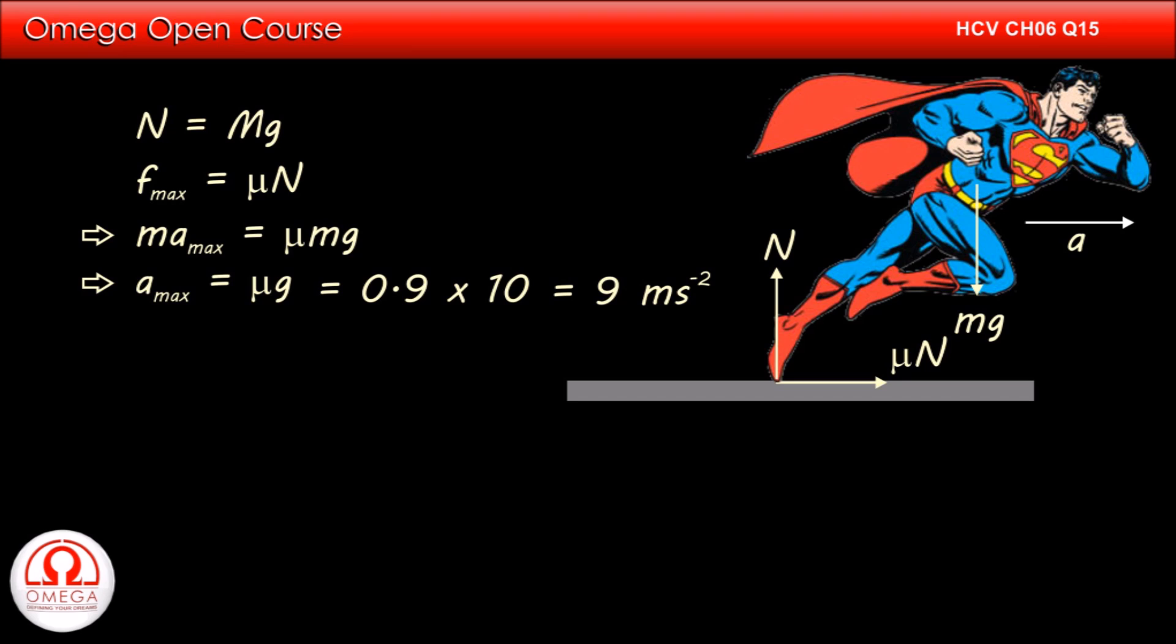From equations of motion, we know that if initial speed is zero, the displacement s is given by half a t squared. Putting the values, we get 50 is equal to half into 9 into t squared. Which implies t squared is equal to 100 by 9, or t is equal to 10 by 3. This is the answer to part A of the question.